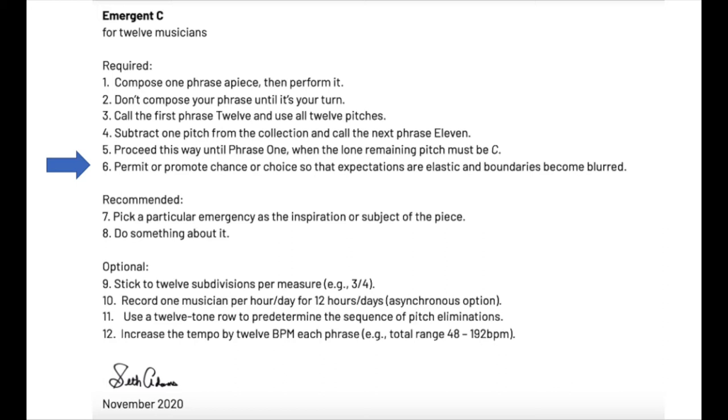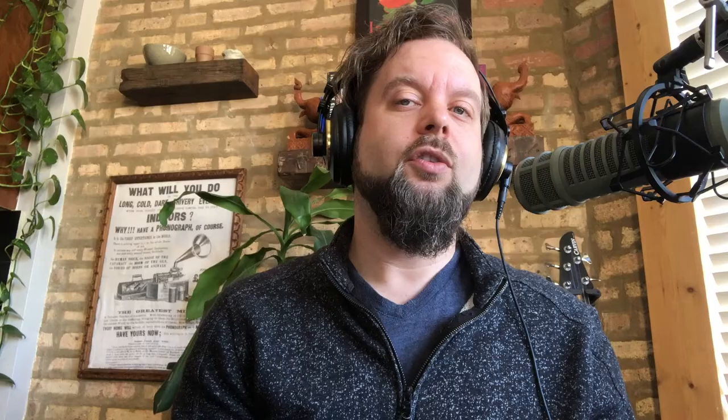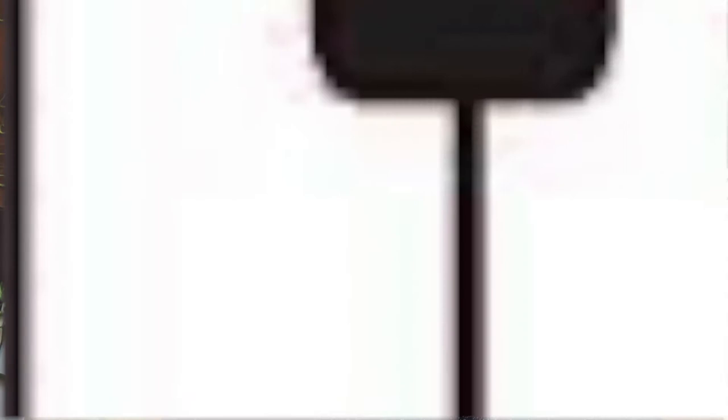Number six: permit or promote chance or choice so that expectations are elastic and boundaries become blurred. This direction was inspired by TDO's first project, N.C. Dorian, a piece by Frank T'Kelly that asks players to choose when to go on to different phrases of music — much like the piece it was inspired by, the 1964 classic N.C. by Terry Riley. The idea behind this instruction is both to aid the gradual change from using the full chromatic scale down to just C, and also to delay part of the creative process until the performance, since the composers and the performers are the same people.